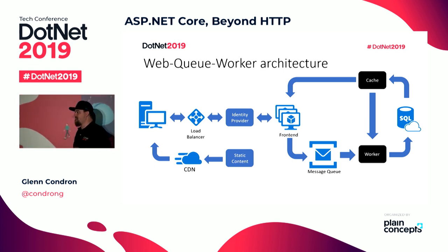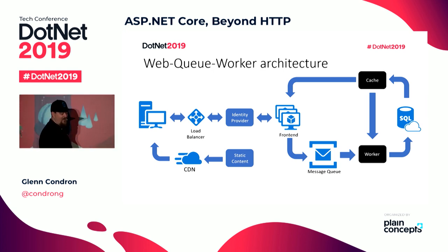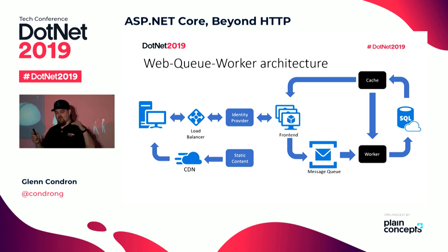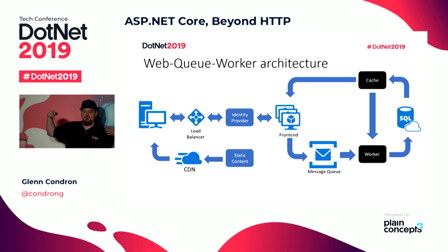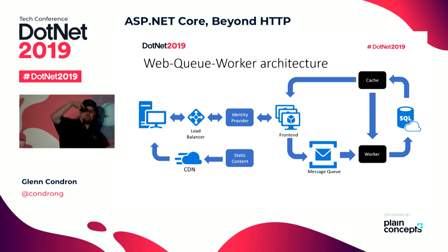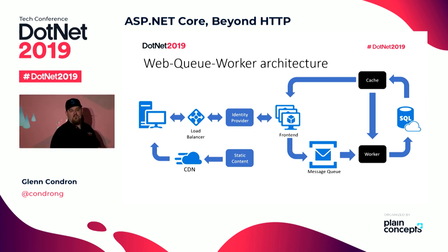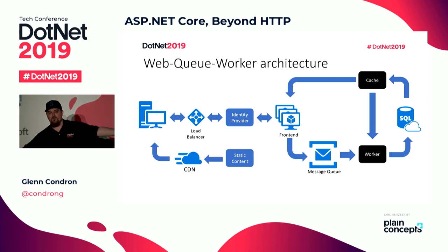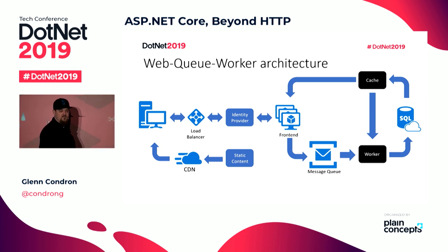We started to look at building things like this — basically a web queue worker — where when the thing comes into the front end, you put a message on a message queue, something else takes the thing off the message queue, puts it in the database, then updates a cache, and then the thing hits the cache. My architecture diagram doesn't fit on the wall anymore. I'm not even sure what's going on anymore. But it's cloud scale.